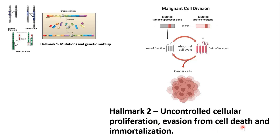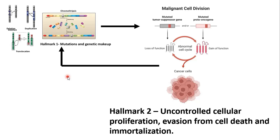Here we will make an interesting observation. Since the cell cycle happening in cancer cells is abnormal without any proper checking of the integrity of the genome, each round of cell cycle keeps piling up new mutations which further makes the hallmark of uncontrolled cellular proliferation, evasion from cell death, and immortalization stronger and stronger.